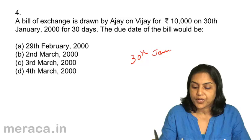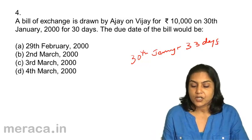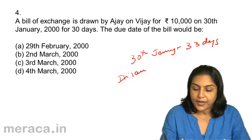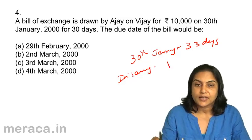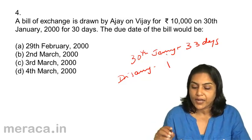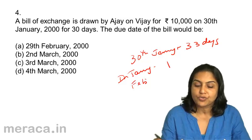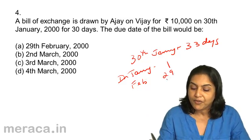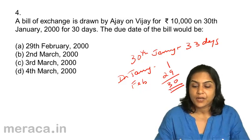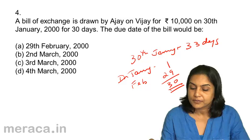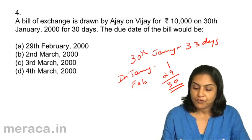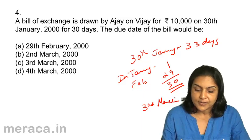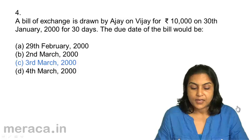It's 30th January plus 33 days (30 days plus 3 days of grace). In January, excluding 30th January, you have 1 day. February 2000 — 2000 is exactly divisible by 4, it is a leap year, so we have 29 days. That gives 30 days total. We need another 3 days: 1st, 2nd, 3rd March. Correct answer is 4c, 3rd March.